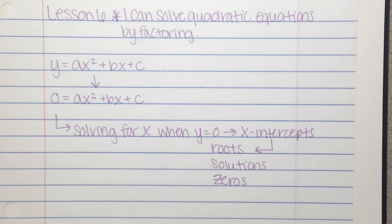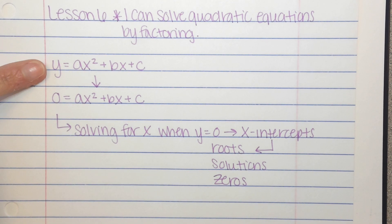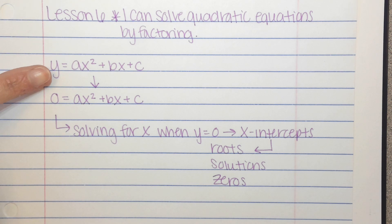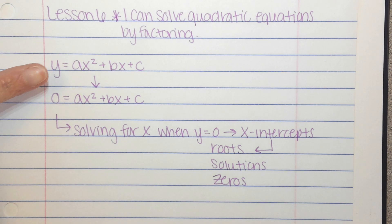So we're going back to factoring, but now we're going to use factoring to solve. You've seen the quadratic equation y equals ax squared plus bx plus c, but now our y is going to be 0.